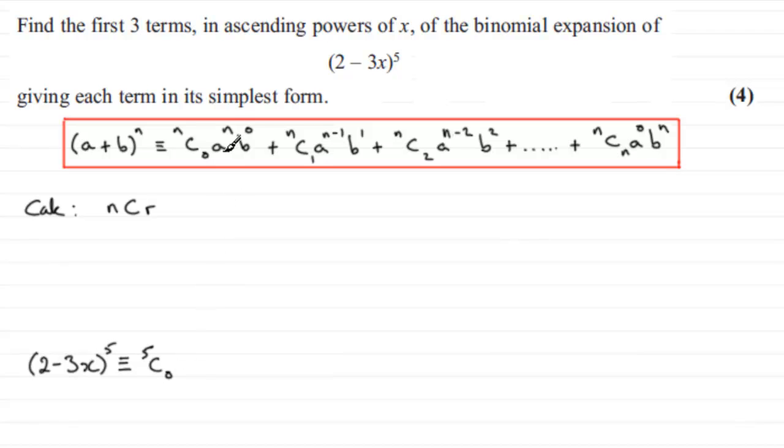And then we've got a to the power n, so that's the 2, to the power 5. Put that in brackets, 2 to the power 5. And then we multiply it by b to the power 0. b is the minus 3x. Okay, take care on that one. It's the minus 3x, all to the power 0. So again, put that in brackets.